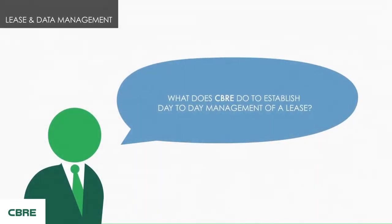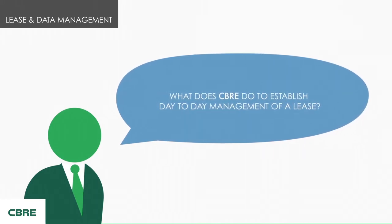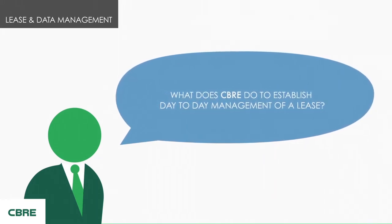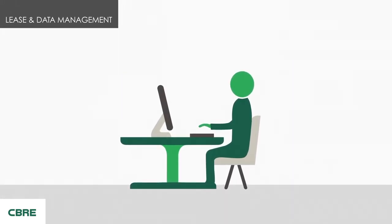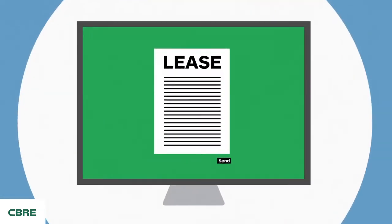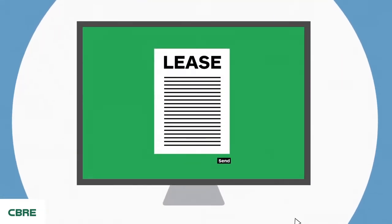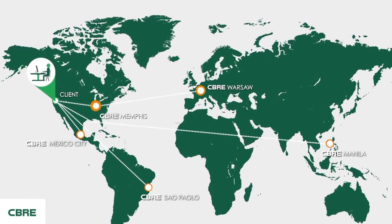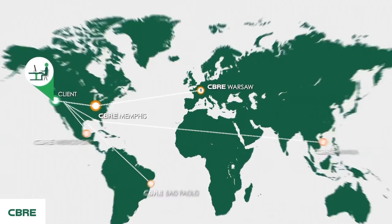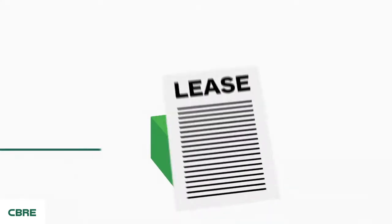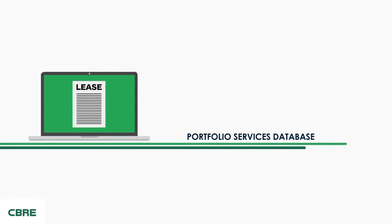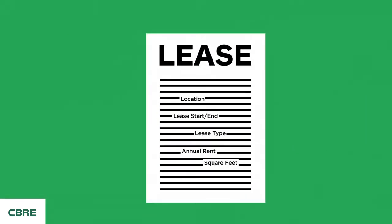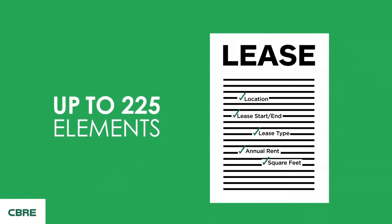What does CBRE do to establish day-to-day management of a lease? Is your process accurate and comprehensive? To begin, all lease administration documents are sent to one of our lease administration hubs around the world. The lease is scanned and loaded into your portfolio services database. Then the lease is abstracted — up to 225 data elements are captured and entered into the database.